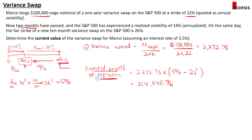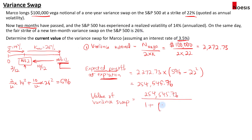But we need to discount it back to month 2. So the value of the variance swap would be the expected payoff of 254,545.76 discounted back by 10 months using the annual interest rate of 3.5%, so that's 10/12 months. This equals 247,331.91. This is the value to the long party, and since Marco is long, he will have a positive value. If Marco had a short position, then this would be negative 247,000.